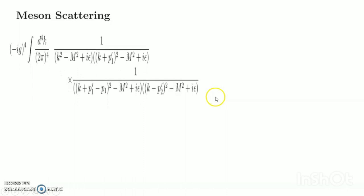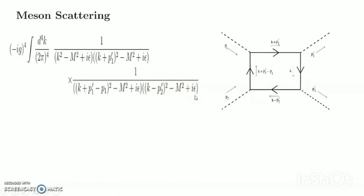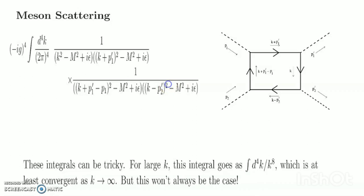Now we discuss meson scattering: φ → φ′. The simplest diagram is a single loop. Momentum conservation at each vertex is no longer sufficient to determine every momentum passing through the diagram. We assign a single undetermined momentum k to one propagator; all other momenta are then determined. This integral can be tricky for large k — the integral goes as d⁴k/k⁴, which at least converges as k → ∞, but this won't always be the case.